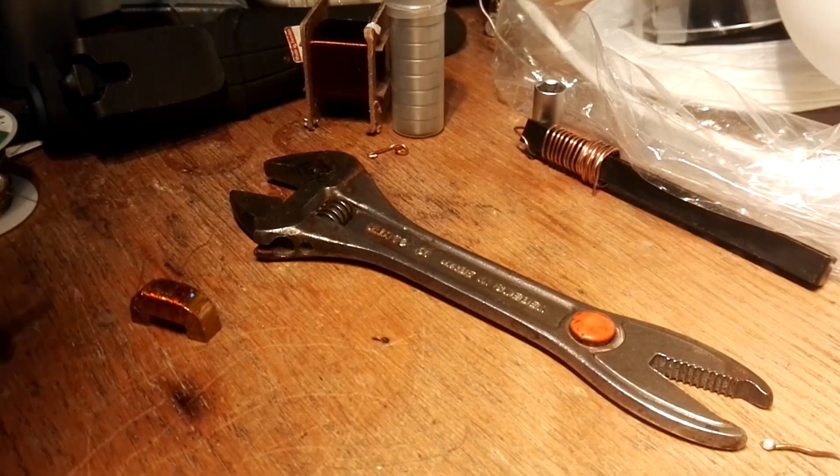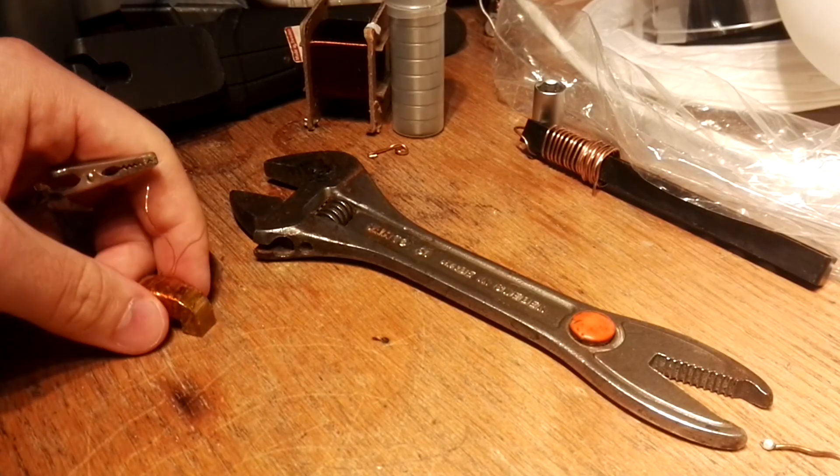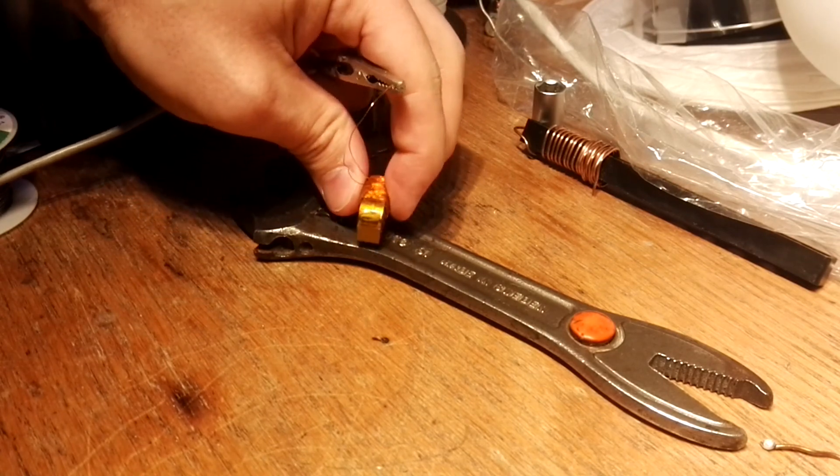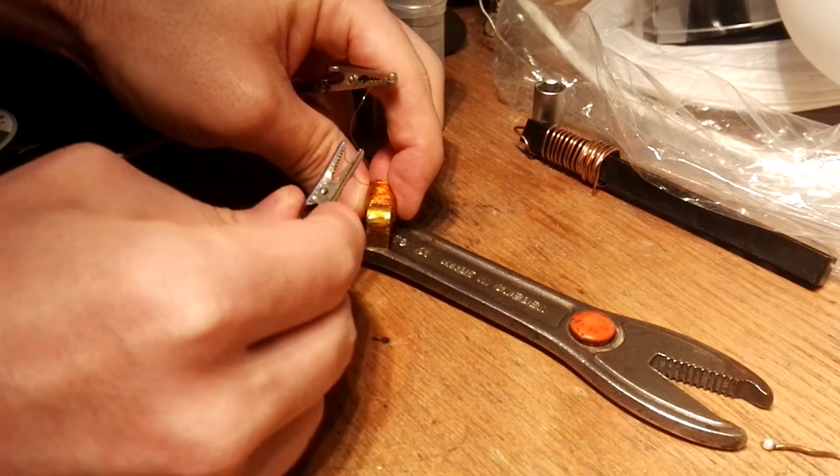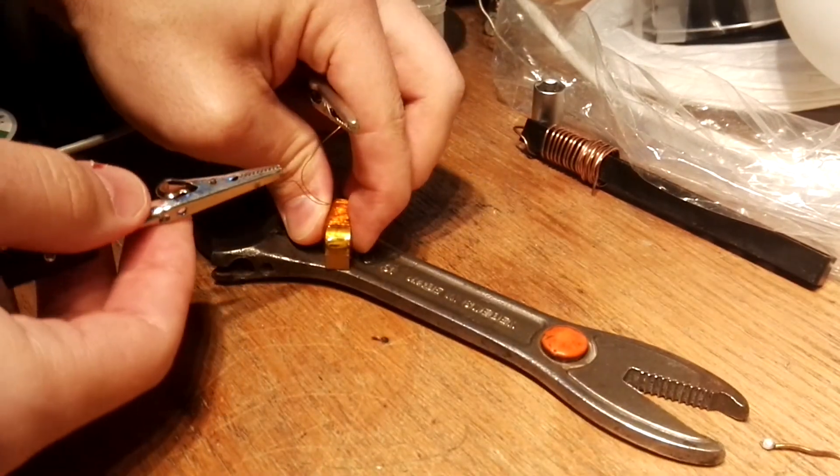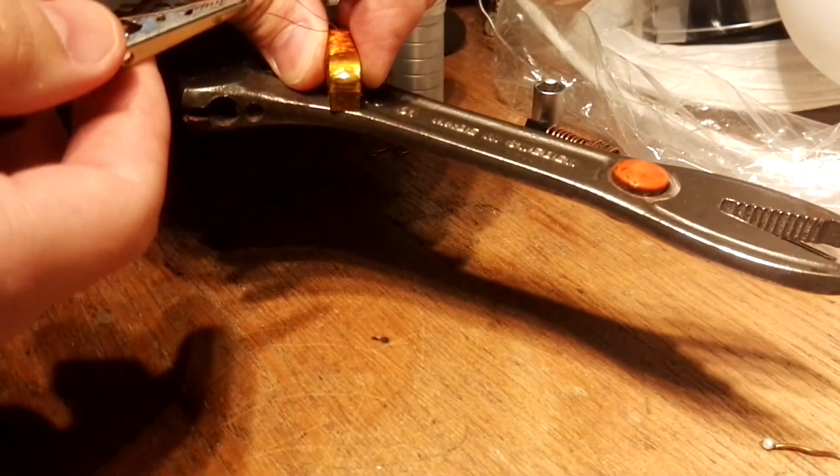The electromagnet is made from electrical steel, which lessens the losses in the material as the magnetic field is fluctuating. The magnet turned out to be quite strong, and here I'm lifting a heavier adjustable spanner with it.